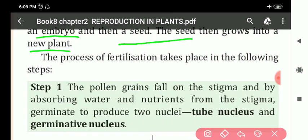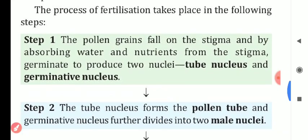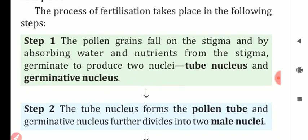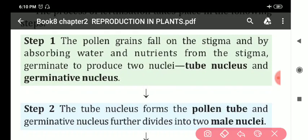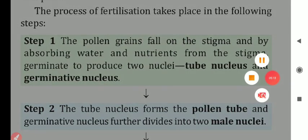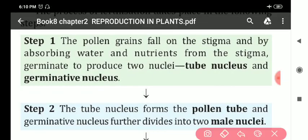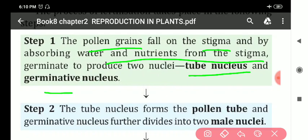The process of fertilization takes place in the following steps. Step 1: The pollen grains fall on the stigma. By absorbing water and nutrients from the stigma, the pollen germinates and produces two nuclei — the tube nucleus and the germinative nucleus.